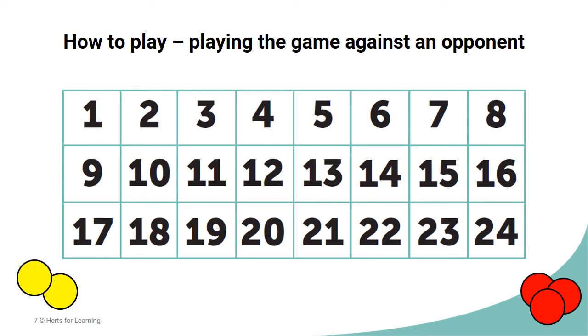If the game is being played against an opponent, the aim is to have the most of your colored counters on the game board when the sequence runs out. Watch the screen to see how these two opponents are playing against each other.